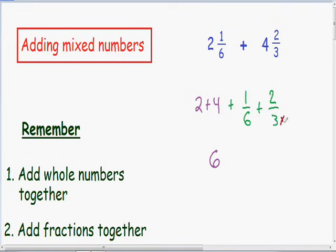So if we multiply 3 times 2, 3 times 2 is equal to 6, which gives us the same denominator as our other fraction. So now we have common denominators.